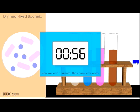So we can see that after the final step, some of the bacteria are stained pink, while the other bacteria are stained purple.